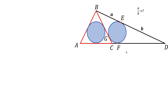We're going to connect the center of the circle, point O, with all the points of tangency. Since side BD is tangent to the circle at point E, the segment connecting the point of tangency to the center of the circle is at 90 degrees to the tangent line. That goes for all tangent lines here — so BE is at 90 degrees to EO, CD is at 90 degrees to OF, and BC is at 90 degrees to GO.